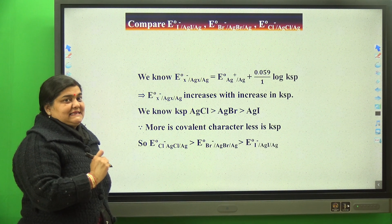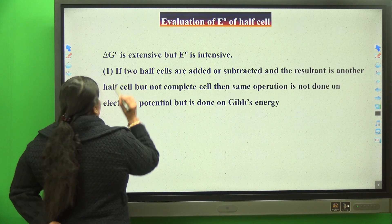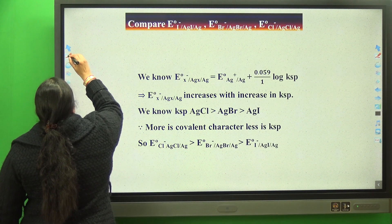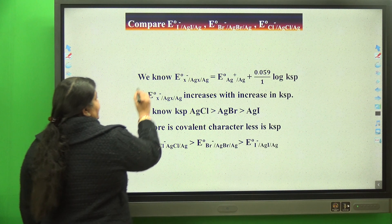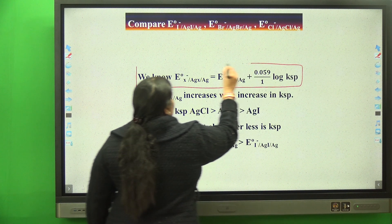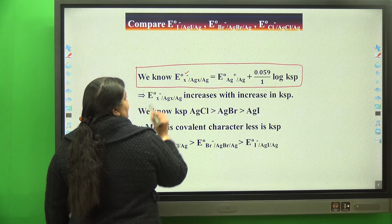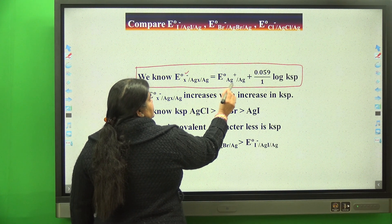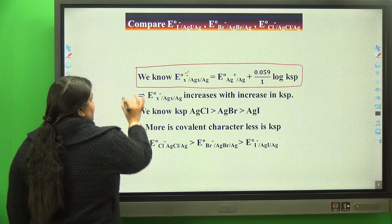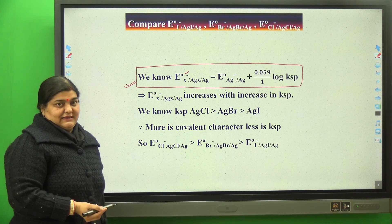What is the basic thing which we must know? We must know the relationship between E° of silver coated with its insoluble salt dipped in its common anion and E° of silver dipped in silver positive. This is the relationship which you must have derived in your 12th class.